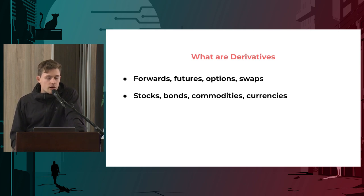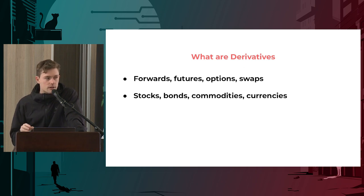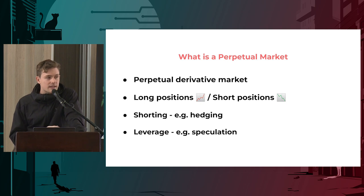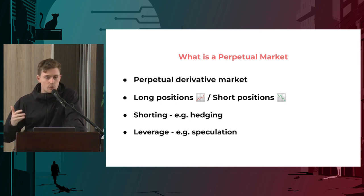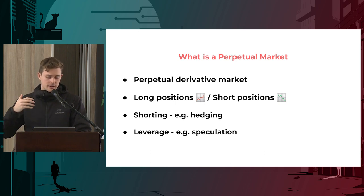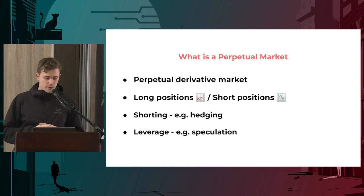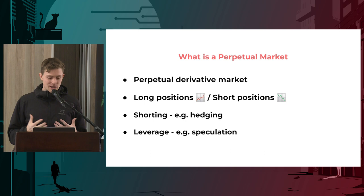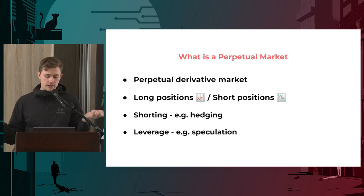For the purposes of this talk, we're going to focus on a specific type: perpetual markets, also known as perpetual futures markets. What makes them special is that their contracts run indefinitely - they run in perpetuity. A regular futures contract has a settlement date where you need to close your position. But with a perpetual derivative market, you can run in perpetuity - you don't have to close your position until you want to, or until you get liquidated.